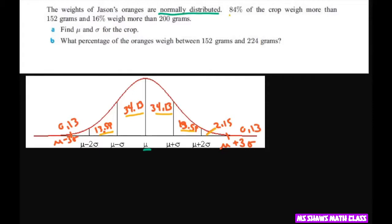So it says 84% of the crop weigh more than 152. So if you add these numbers here, let's do this in green, add all these numbers up. It's going to round to 84% because this is 68.26 and you add all this up and you're going to get 84%. So we know starting at μ minus σ, that equals 152.